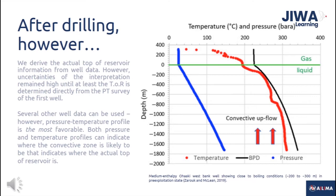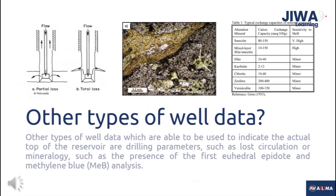Stein-Grimson in 2013 further establishes how the pressure-temperature profile is the most reliable data used to confirm the actual Top of Reservoir. Other types of well data that can be used to indicate the actual Top of Reservoir include drilling parameters such as lost circulation, and mineralogy such as the presence of the first euhedral epidote or methylene blue analysis.